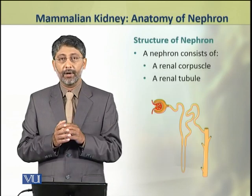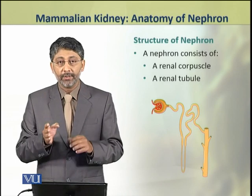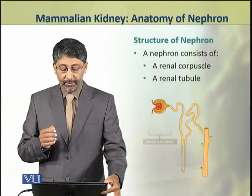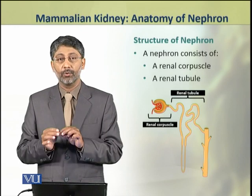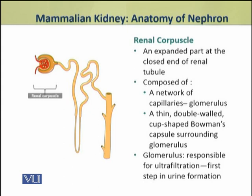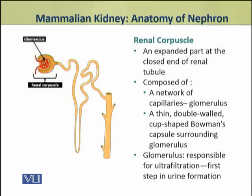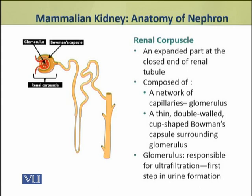A nephron consists of two major units: the renal corpuscle and the renal tubule. The renal corpuscle is an expanded part at the closed end of the renal tubule. It is composed of a network of capillaries called the glomerulus. The second part of the renal corpuscle consists of a thin, double-walled, cup-shaped structure called Bowman's capsule, which surrounds the glomerulus.